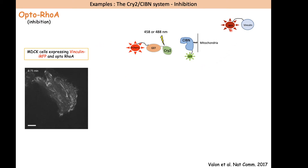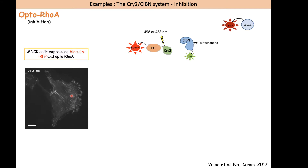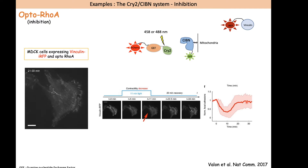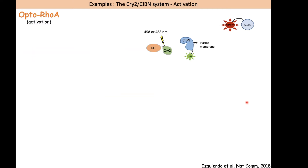The authors used an EGFP-Vinculin reporter, which reflects focal adhesions. At the beginning there is a steady state, and when light is activated you see relaxation and diminution of Vinculin fluorescence, meaning the cell is decontracting. This is quantified, showing the decrease in focal adhesion fluorescence, meaning RhoA has been inactivated at the plasma membrane. When illumination stops the focal adhesion fluorescence returns to normal. So RhoA was inactivated by sequestering its activator at the mitochondria.